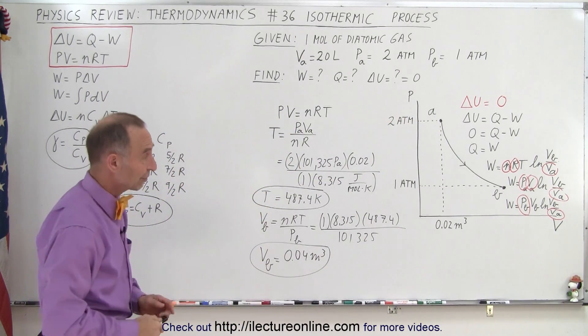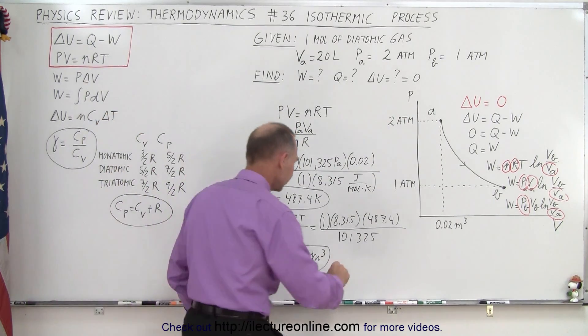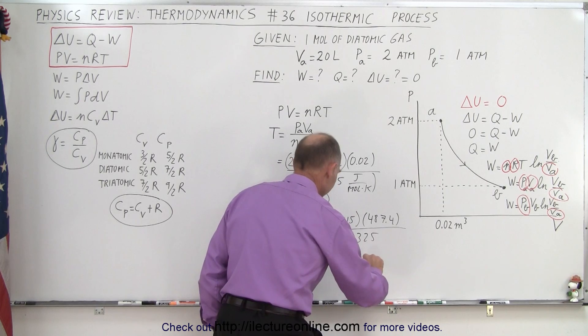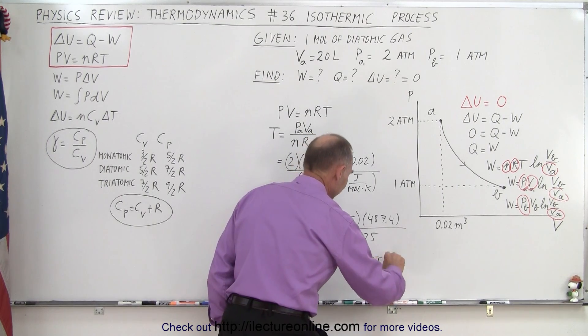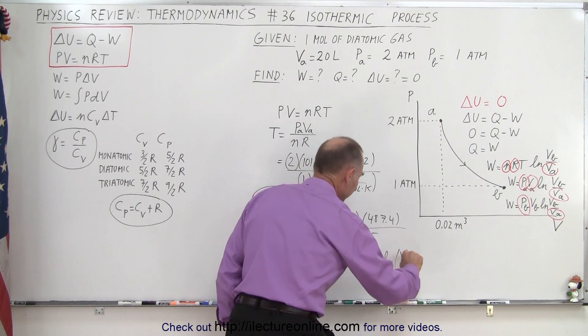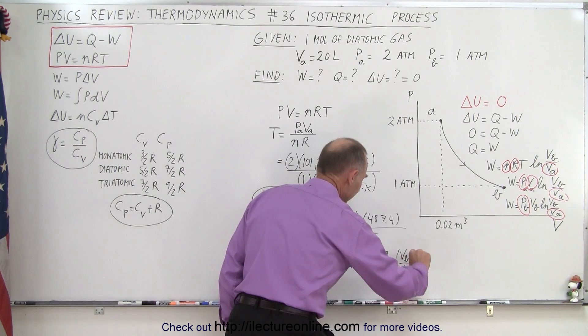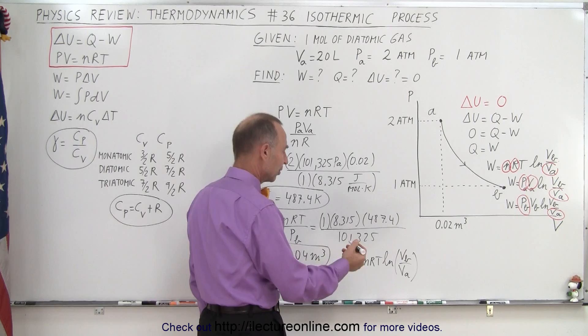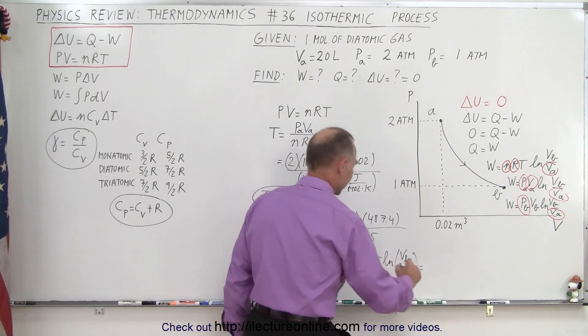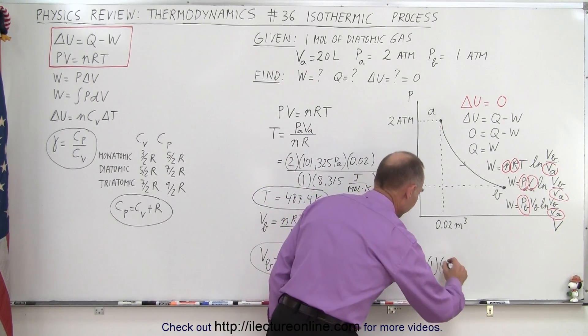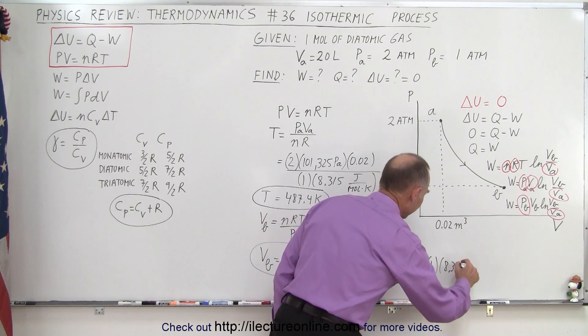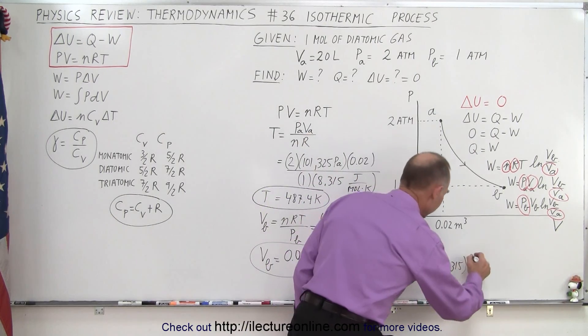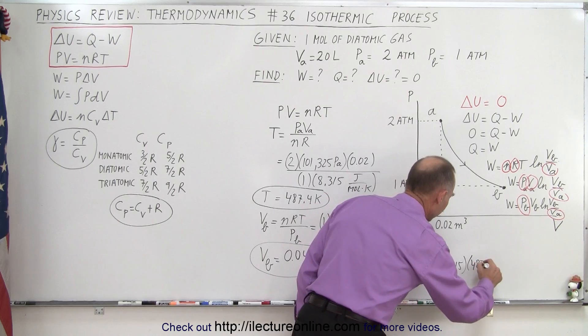The last thing to do is to find the work done. The work done is therefore equal to nRT times the natural log of V at B divided by V at A. It doesn't matter which of the three equations we pick. Now we know everything: the temperature and the volume at B. So in this case, the number of moles is 1, R is 8.315, the temperature is 487.4.